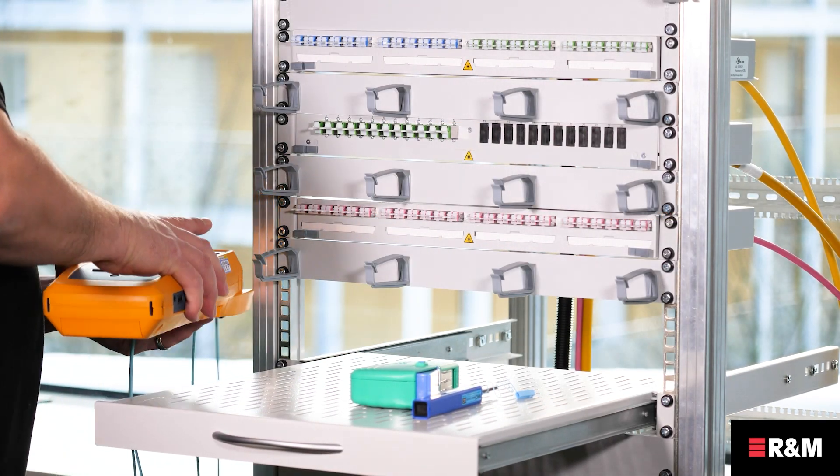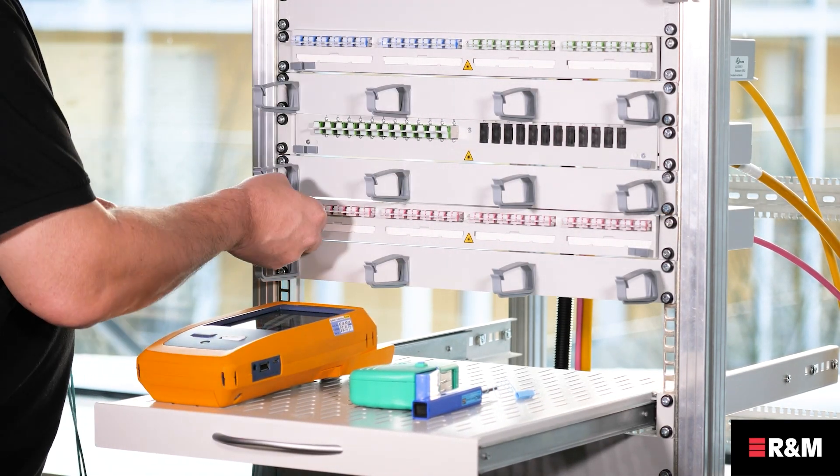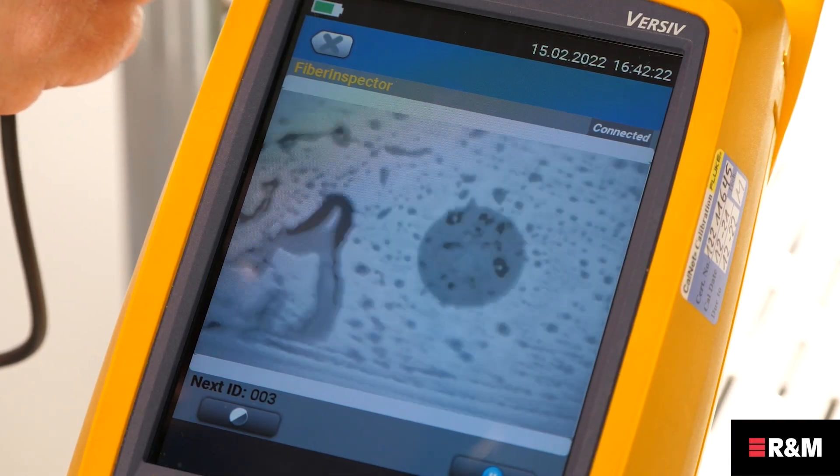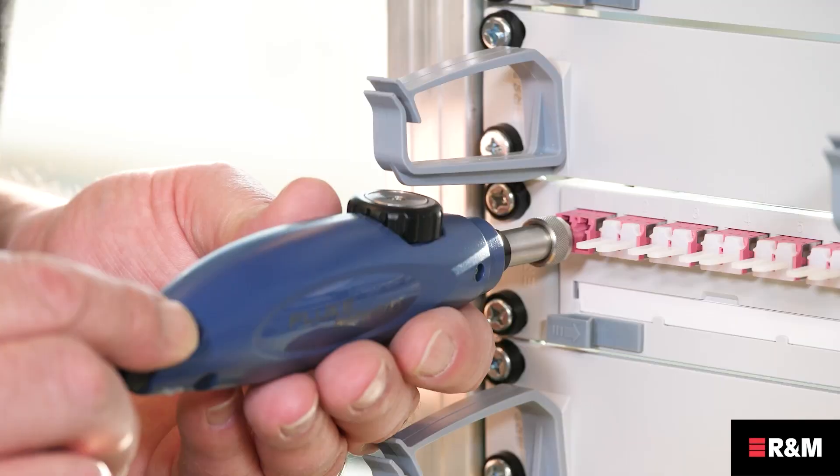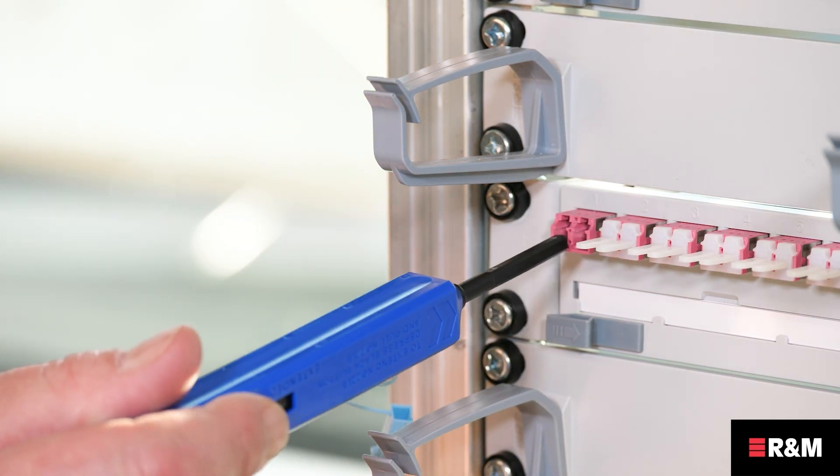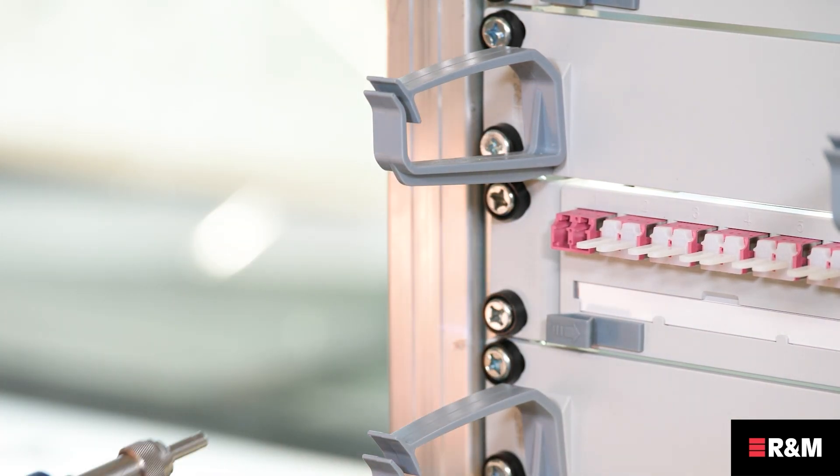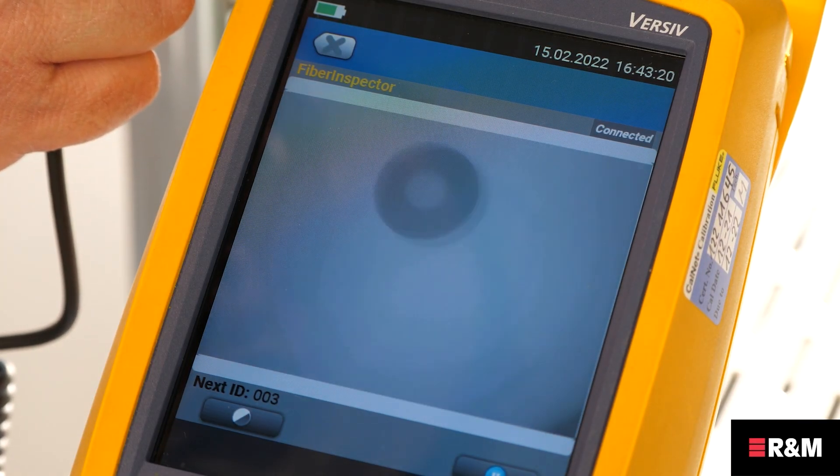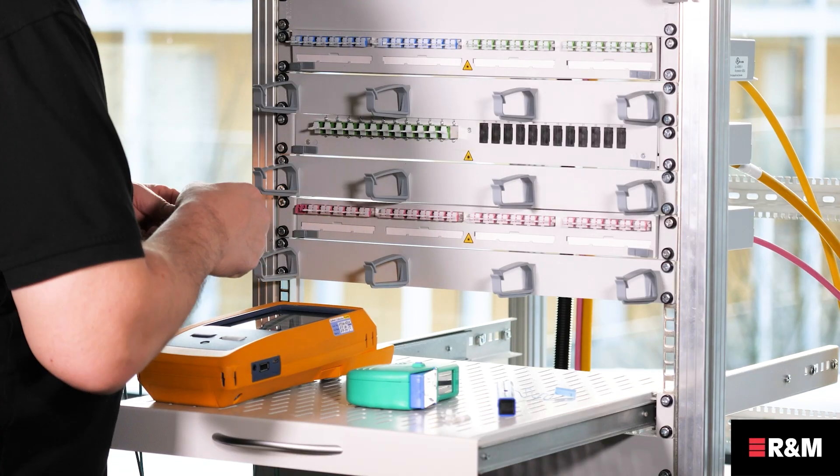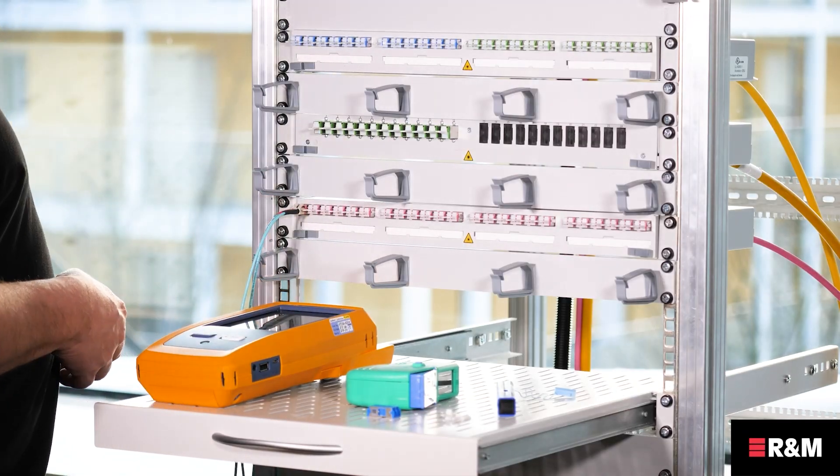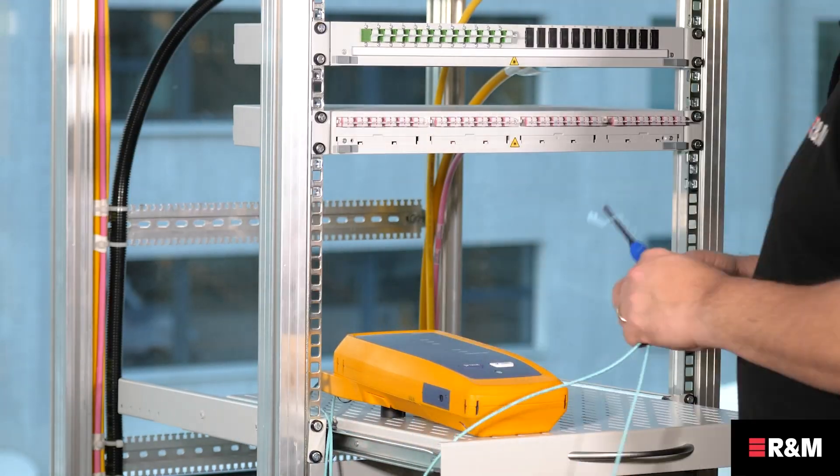Before you start the test, inspect and if necessary, clean the connectors in the panel and the free end of the test reference cord. Remember that when testing duplex links, both apertures of the adapter and two reference cords must be inspected. This needs to be done at both ends of the link. Make the connections and ensure that they are securely fitted on both sides of the fiber link.